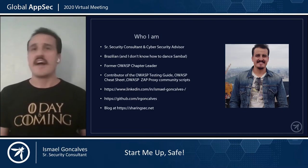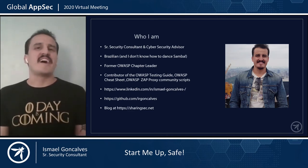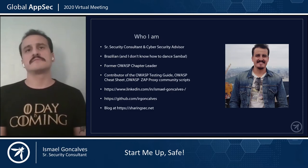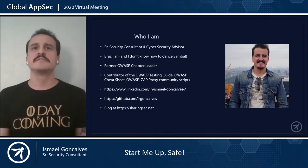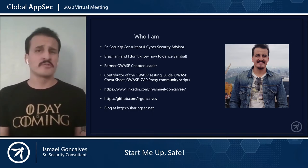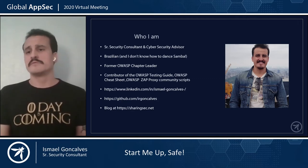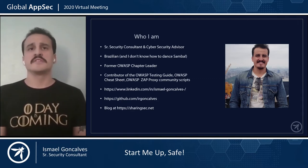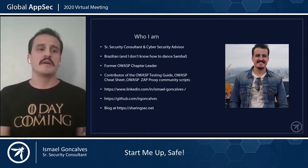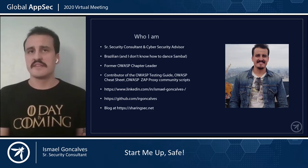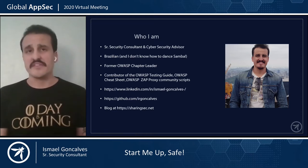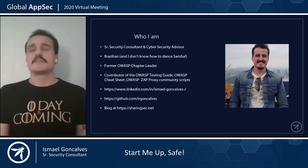Currently, I'm a senior security consultant at F5, and I'm also a cybersecurity advisor in a startup related to social networks. I'm also a former OWASP chapter leader, DAO in Brazil. I am Brazilian, and I don't know how to dance samba. I've made contributions to some OWASP projects, such as the OWASP Testing Guide, the OWASP Cheat Sheet, and also the OWASP ZAP proxy communities. I'm also a bug hunter in one of the known bug bounty initiatives, and I share things with the community on my GitHub and also blog at sharingsec.net.